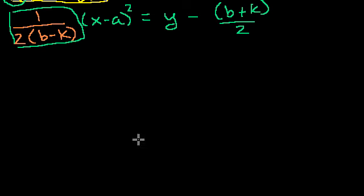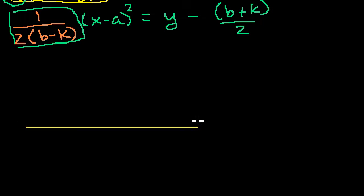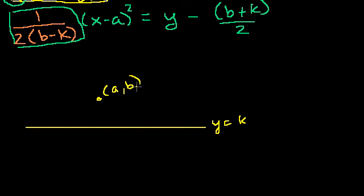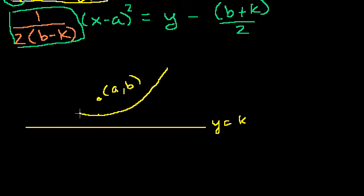In the last video, we showed that if you had a line — which we'll call a directrix — with the equation y is equal to k, and you have a point that's our focus at the coordinate (a, b), then the locus of all points in the xy-plane that are equidistant to this focus and this directrix has a shape that looks like this — and it's an actual equation.